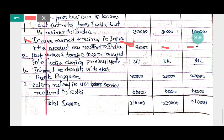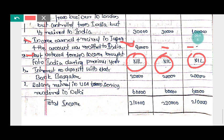Seventh point — past untaxed foreign income brought into India during the previous year. This income was not taxed in any previous year and is now brought into India. It is exempted for all statuses — ordinary resident, not ordinary resident, and non-resident. Add a working note: past untaxed foreign income is exempted.